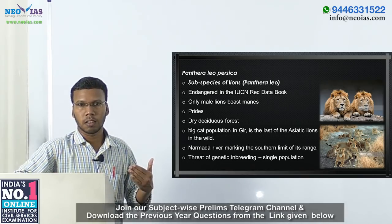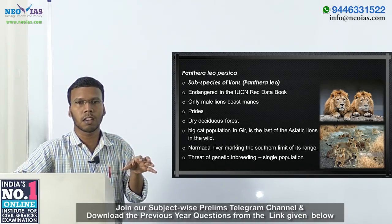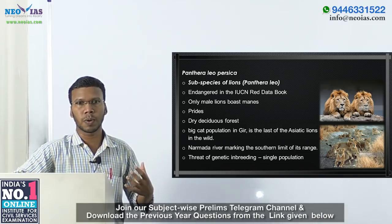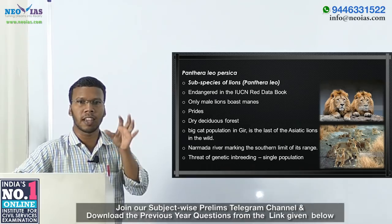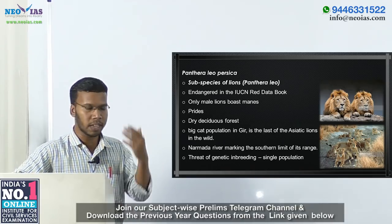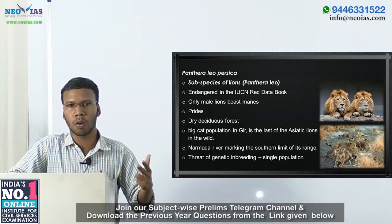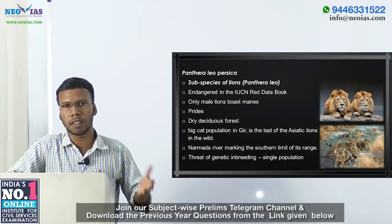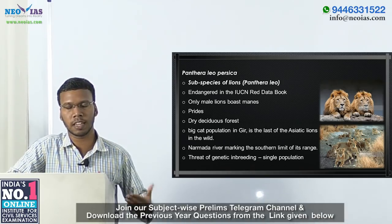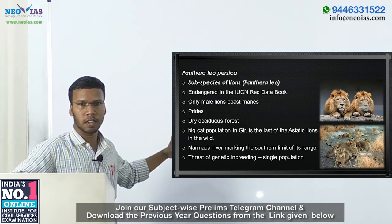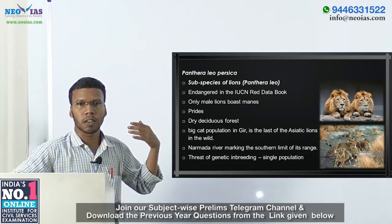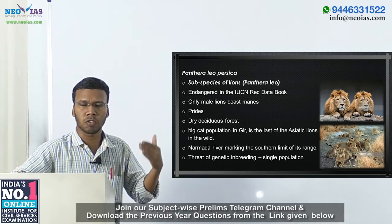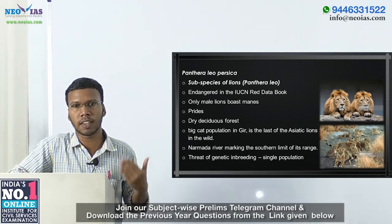Since all Asiatic lions are confined to a single habitat, any epidemic outbreak, disease outbreak, or natural calamity like forest fire or earthquake could vanish the entire Asiatic lion population from Gir National Park. Gir National Park hosts around 500 Asiatic lions, and experts say the park is overcrowded, as its carrying capacity has been exceeded.